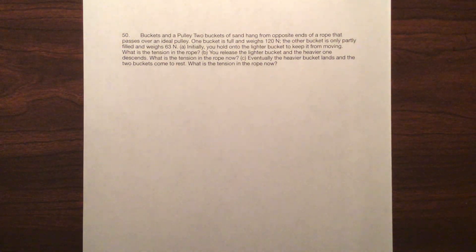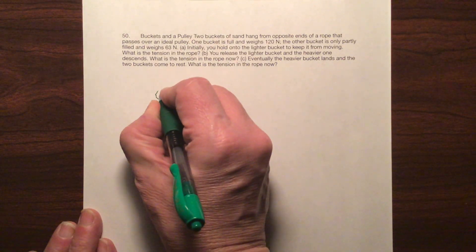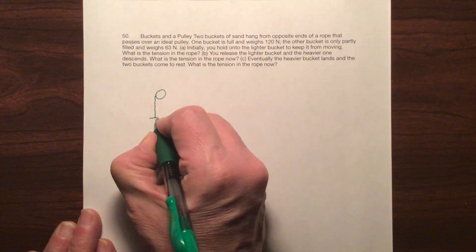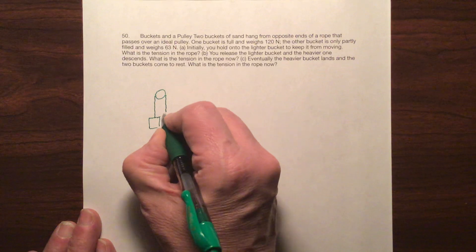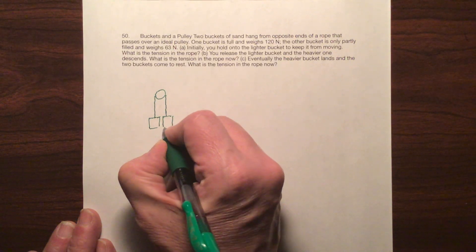Hello, this is question number 50 from the end of chapter 6 of Walker Physics 4th Edition. And we have buckets and a pulley. So it looks like we have, if you remember, we did one the other day like this. It's called an Atwood machine where you have a pulley and then you have two weights,